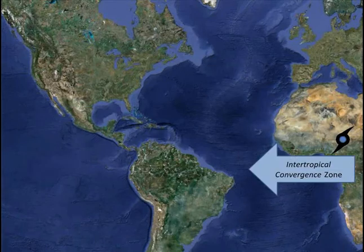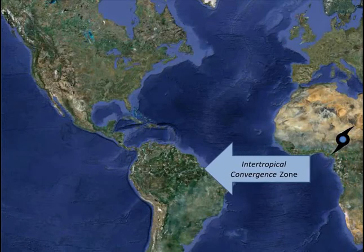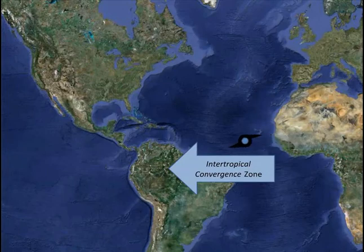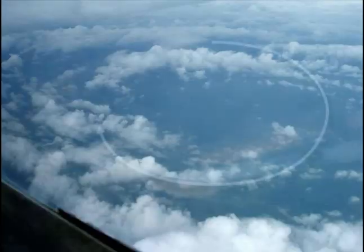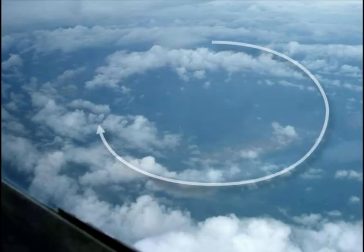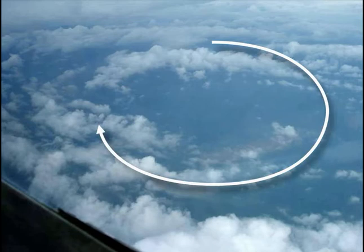Storms forming over the Atlantic are pushed forward by winds known as the intertropical convergence, and then they are carried northward by the trade winds. Many storms will have a bit of a circular motion known as cyclonic circulation. As we have seen, this circulation is generated by eddies in Earth's atmosphere.